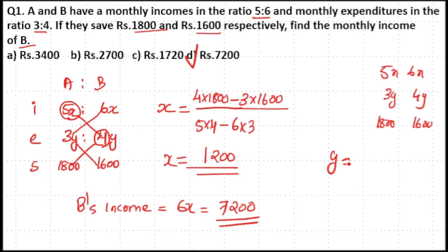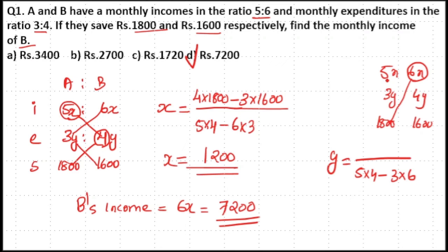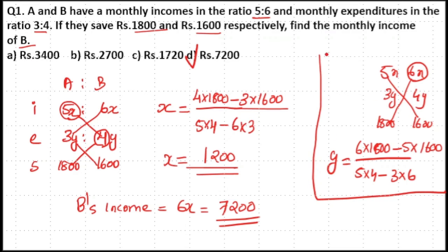Your y value — that is, the expenditure unit — will have the same denominator as 5 into 4 minus 3 into 6, but the numerator will be: mark the second value of the first row and cross multiply between 6 into 1800 minus 5 into 1600. This will be your y value, and you can find it directly from this method.